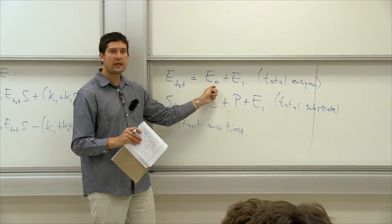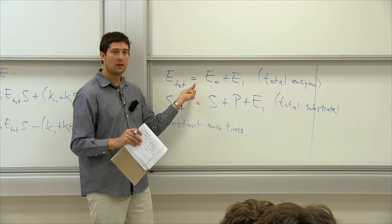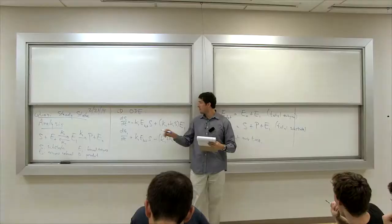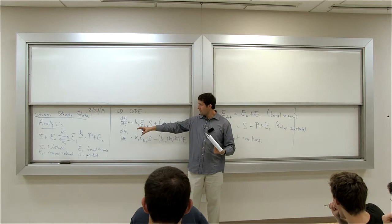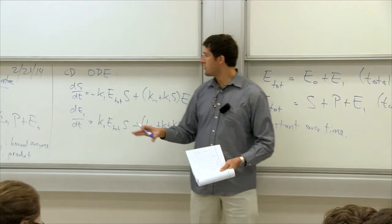What we did last time was replace E0 in the system by writing it as E_tot minus E1, so we essentially get rid of one variable. E0 never shows up anymore because we replaced it in terms of a parameter and a variable. And the other variable, P, we just ignored — because none of the other variables' concentrations depends on P. So we can analyze this system by itself, and then if we want to know how P changes, we'll use that equation.